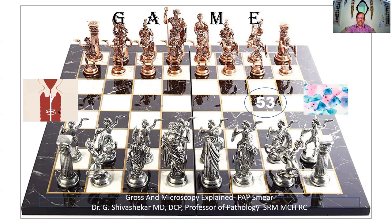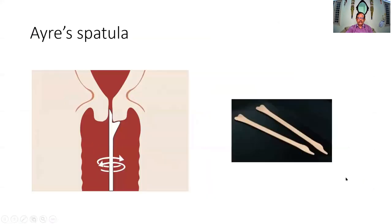I hope you are able to identify these two instruments. The Ayre's spatula is one. This is a line diagram that you can draw for your cervix or cytology. This is the uterus, this is one lip of the cervix, another lip of the cervix, and this is the vagina. Here I'm inserting an instrument called the Ayre's spatula.